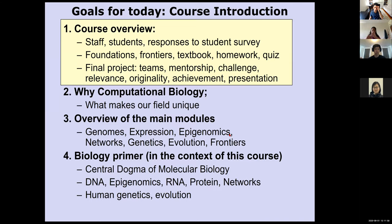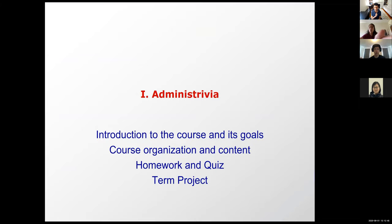So that's our goal. We are first going to be talking about the course overview, introducing the staff, introducing the students, and responses to the student survey, and then introducing the dichotomy of foundations and frontiers, the textbook, the homework, quiz, and also the final project — teams, mentorship, challenges, relevance, originality, achievement, presentation — these are going to be the criteria for the final project. Then we'll dive into why computational biology, give an overview of the main modules, a biology primer, introduce the central dogma and layers of gene regulation, and also human genetics and evolution.